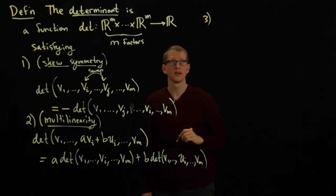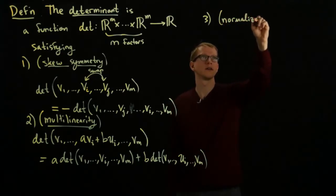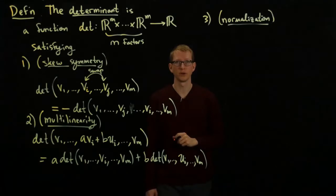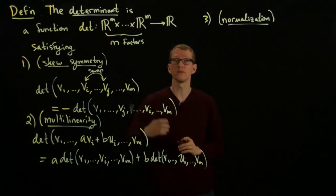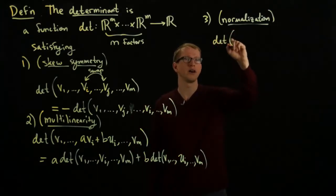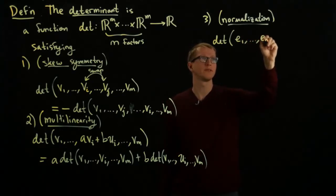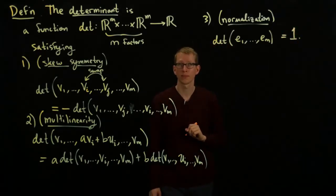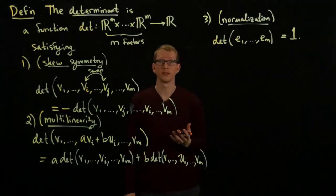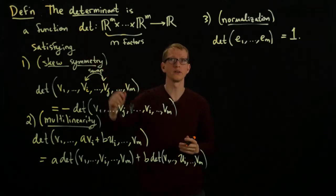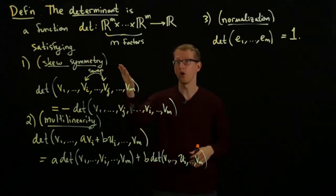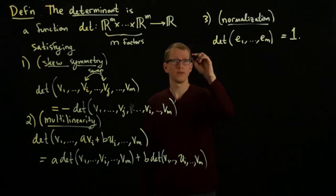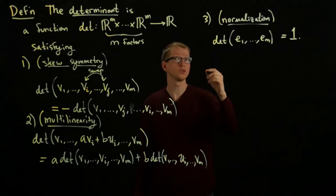The third condition is called normalization. We can look at a very particular set of vectors to plug into our function: the standard unit vectors in R^n. The determinant of the standard unit vectors we specify to be equal to 1. It's a theorem that it's appropriate to use the word 'the' here, because once I've specified all of these conditions, there's only one function that satisfies all of these properties.